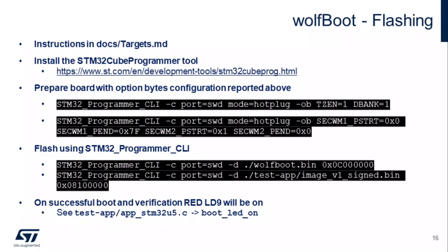For testing and debugging, flashing is done with the STM32 Cube Programmer command-line interface tool. These are examples of how you would actually program it — one is setting the option bytes for TrustZone, and then there's flashing wolfboot.bin and the test app. You could also flash the factory.bin if you wanted.